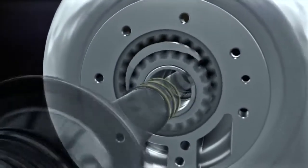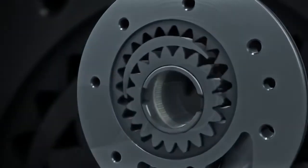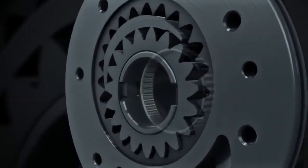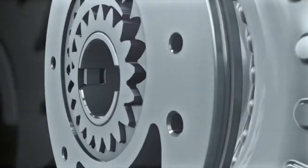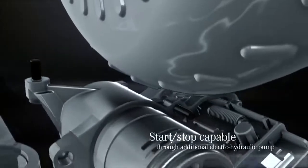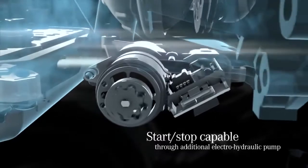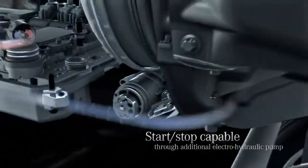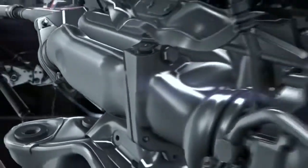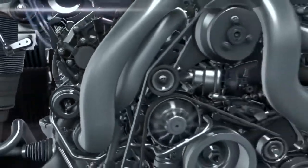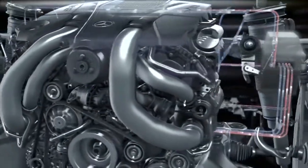The 7G Tronic Plus is now also equipped with a start-stop system. In the case of the fuel saving automatic switch off of the engine, the new electromotive auxiliary oil pump engages and maintains a basic oil pressure in the transmission. When the engine is restarted, the transmission is thus immediately ready for use. The fuel consumption is thereby further reduced.